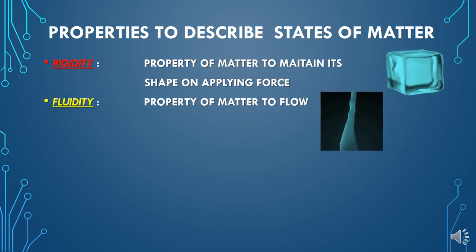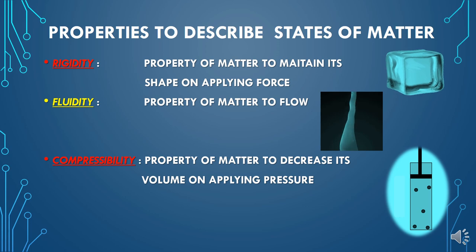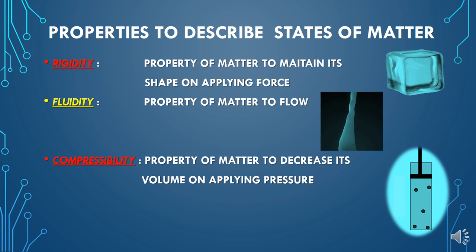The second important property is fluidity — the property of matter to flow is called fluidity, and it is a unique property of fluids. Next is compressibility. As you can see in the image, if you apply pressure on an object and it decreases its volume, then that property to decrease its volume on applying pressure is called compressibility.